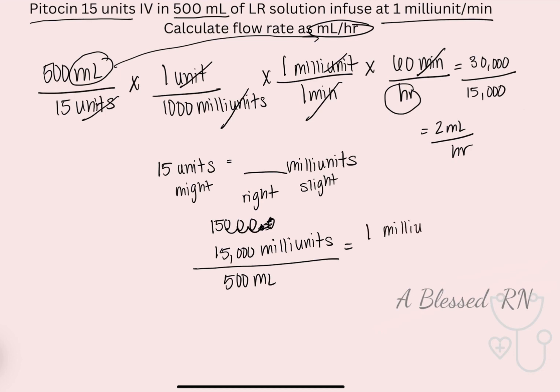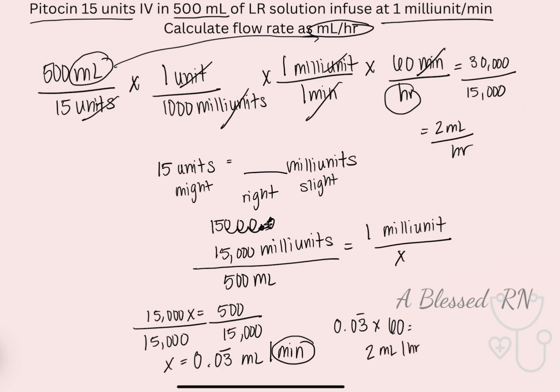So that's going to equal 1 milliunit over X. And we will cross multiply and divide. So 15,000 X equals 500 divided by 15,000 on both sides to isolate X. And it'll equal 0.03333333 repeating. But this is milliliters per minute. We need milliliters per hour. So you're going to have to take that number, the 0.03 repeating, and multiply it times 60 so you can have 2 mLs per hour.